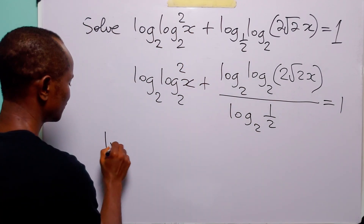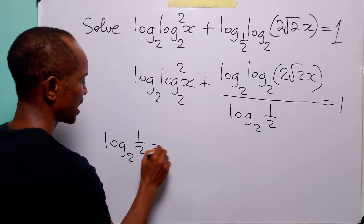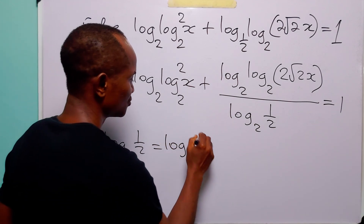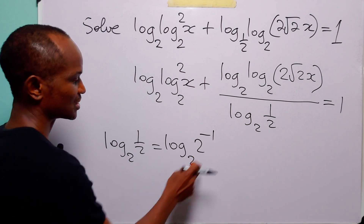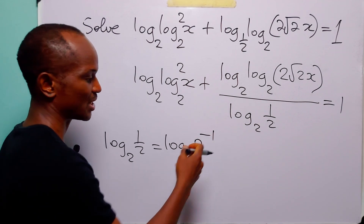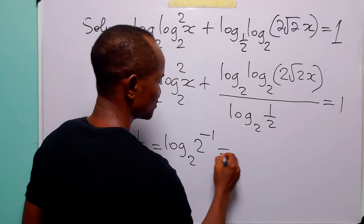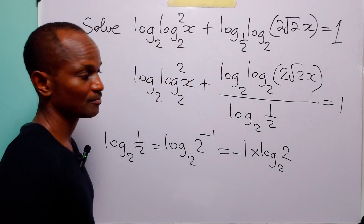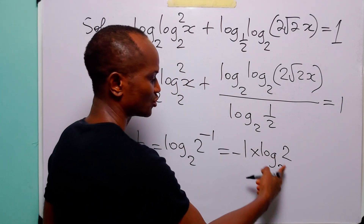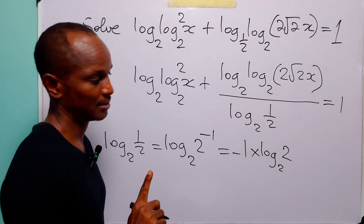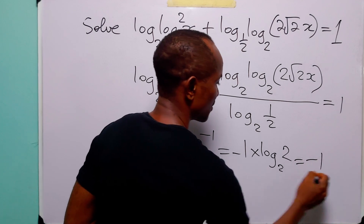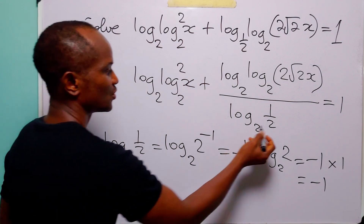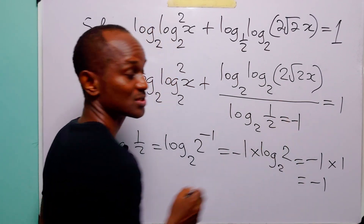Now let us evaluate log to base 2 of half. From our studies of indices, we know that half can be written as 2 to the power minus 1. Applying the power rule of logarithms, we can bring down the exponent minus 1 to become a multiplier, giving us minus 1 times log to base 2 of 2.